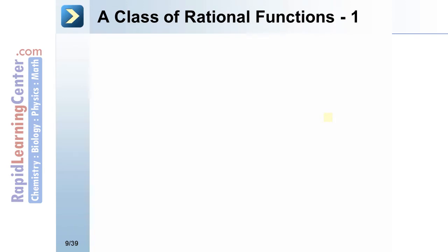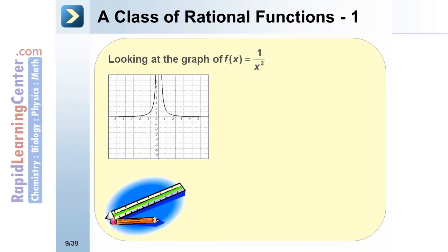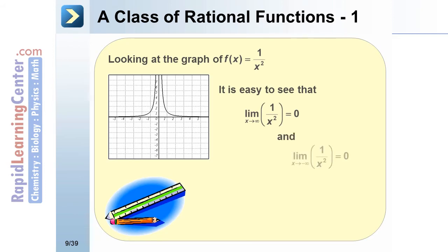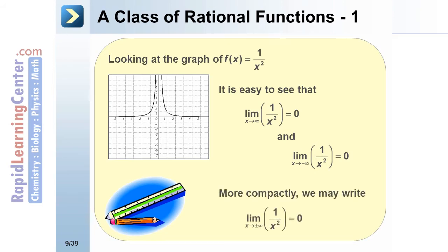Let's look at a class of rational functions. Consider the graph of 1/x². It's easy to see that the limit as x approaches infinity of 1/x² equals 0, and the limit as x approaches negative infinity of 1/x² also equals 0. We can represent this compactly as: the limit as x approaches plus or minus infinity of 1/x² equals 0.